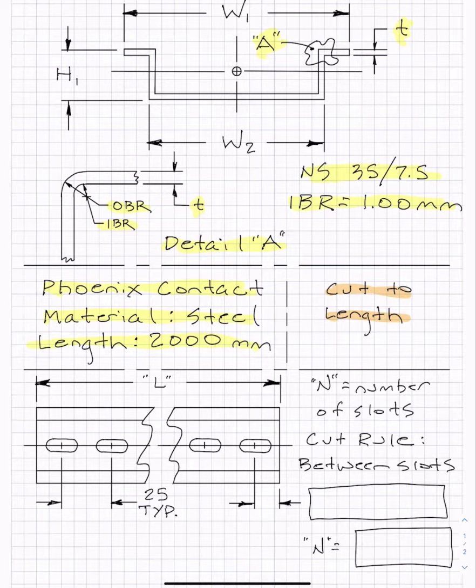And the way we're going to cut this to length is we're going to come up with a rule to cut this DIN rail. And the rule is we're going to cut it halfway between slots. So anywhere you cut the DIN rail, we're going to say it's going to be cut right in the middle of two adjacent slots. That way the lengths of the DIN rail are going to be increments of 25 millimeters.